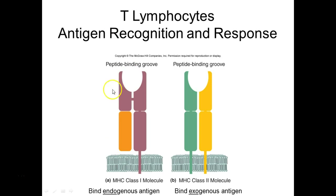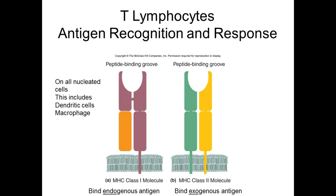MHC class 1 is necessary for endogenous antigens — it's on all nucleated cells, including macrophages and dendritic cells. Think about what could get inside our cells and create a problem: viruses must get inside cells to multiply no matter what. MHC class 1 plays a major role in identifying viral infection, as well as some bacteria, protozoa, and intracellular parasites. Endogenous means 'within,' so anything that gets into our cells can be presented accordingly.